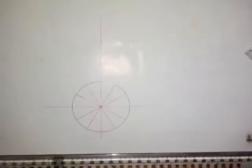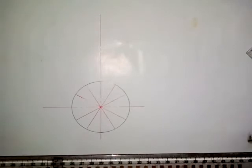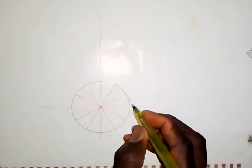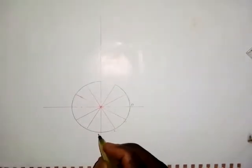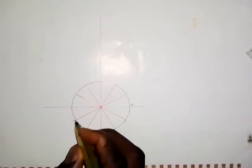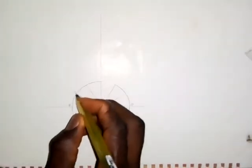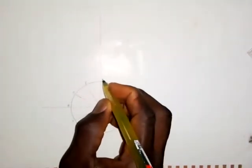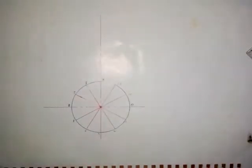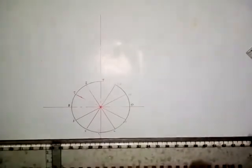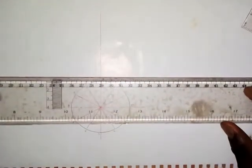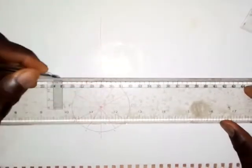I have divided the circle into 12 equal parts and I am going to number each point on the circle. I will call them: zero, one, two, three, four, five, six, seven, eight, nine, ten, and eleven. So I have divided it into 12 equal parts. The next thing is to draw a baseline.